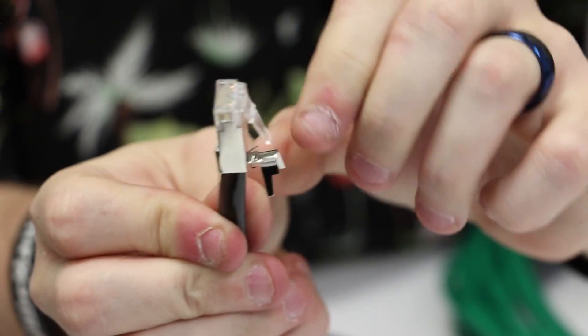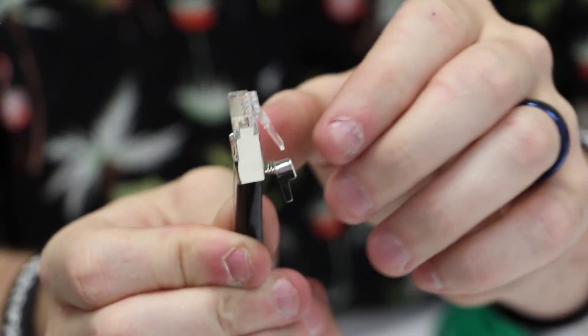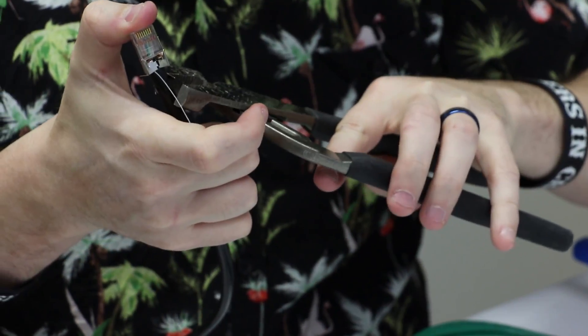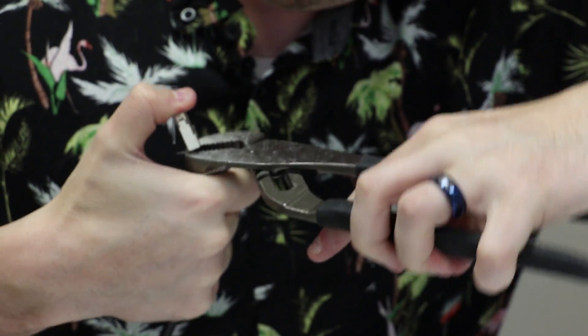And then you still have your drain wire here, so you're going to wrap it around this last piece, and then you're going to bend it over and take a pair of pliers and just kind of crimp that shielding down around the wire.